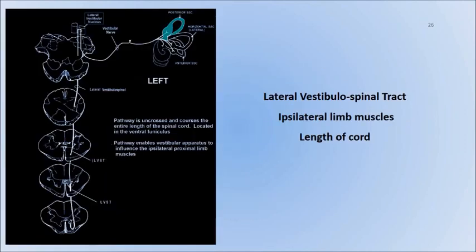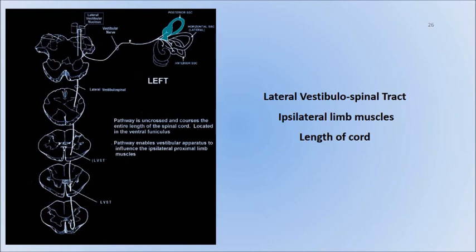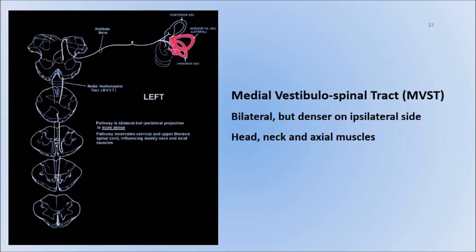The lateral vestibulospinal tract descends ipsilaterally to the sensory receptors of the vestibular system. It controls and modulates the limb muscles and runs the entire length of the cord, making it a powerful pathway for establishing balance and stabilization during ambulation. The medial vestibulospinal tract has bilateral innervation, but the innervation on the descending side ipsilateral to the stimulated receptor is more dense. It supplies motor control to the head, neck, and axial muscles — again an important tract that, if we can manipulate and modulate, should help with posture and ambulation in patients with balance impairment.